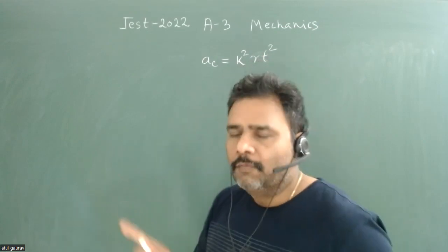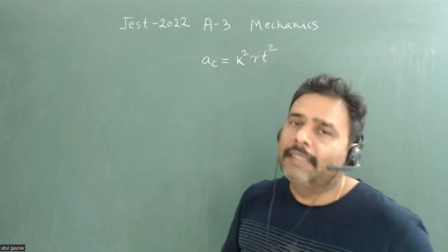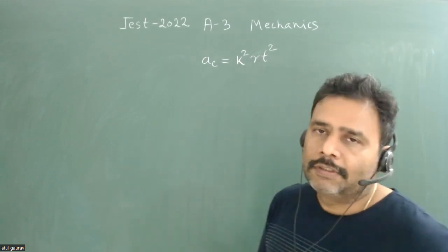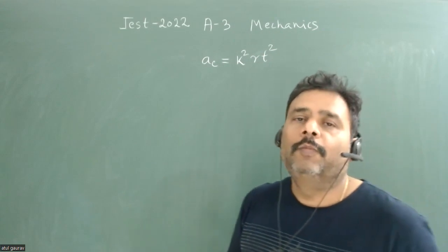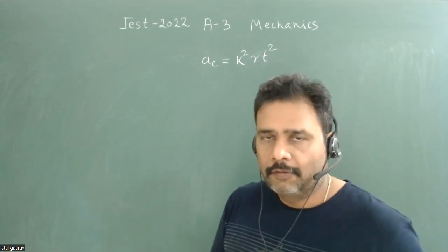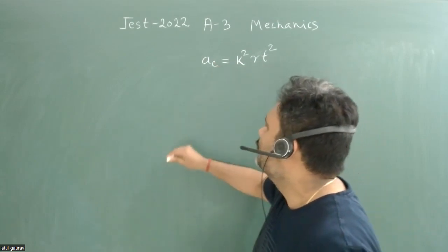Obviously the particle is moving in a circular track, so there is centripetal force. The centripetal force is mω²r. This is the centripetal force, but the centripetal acceleration is given.